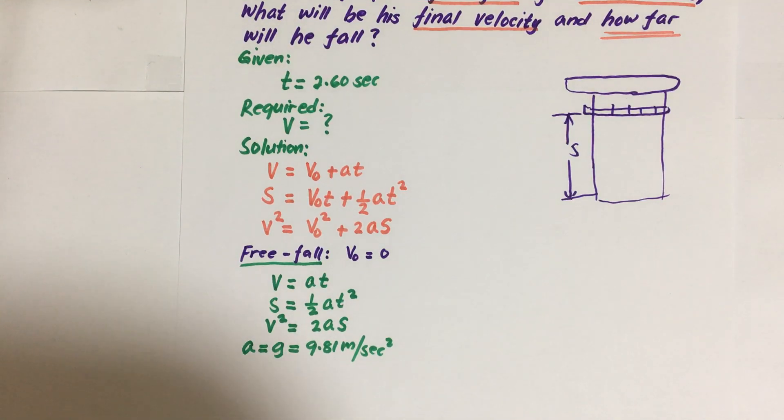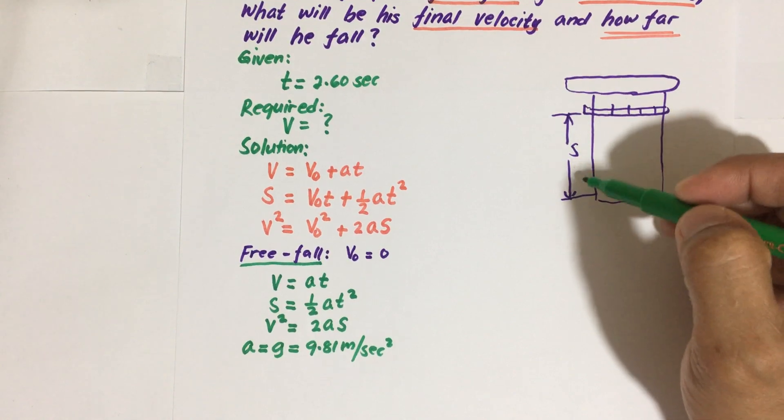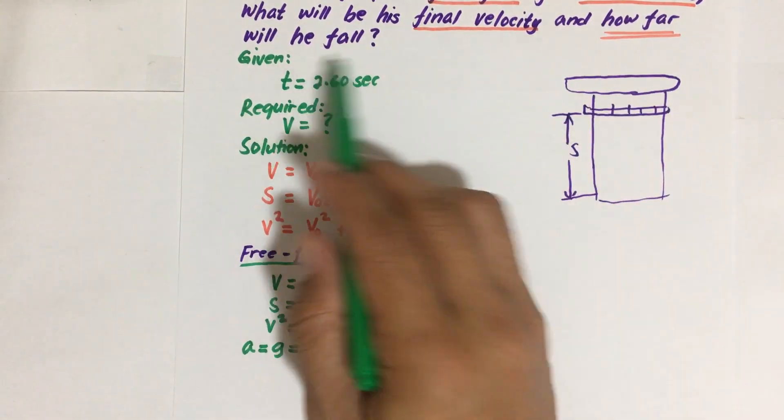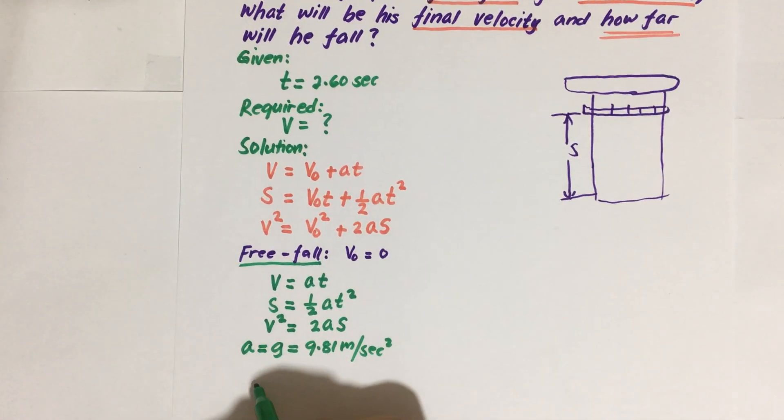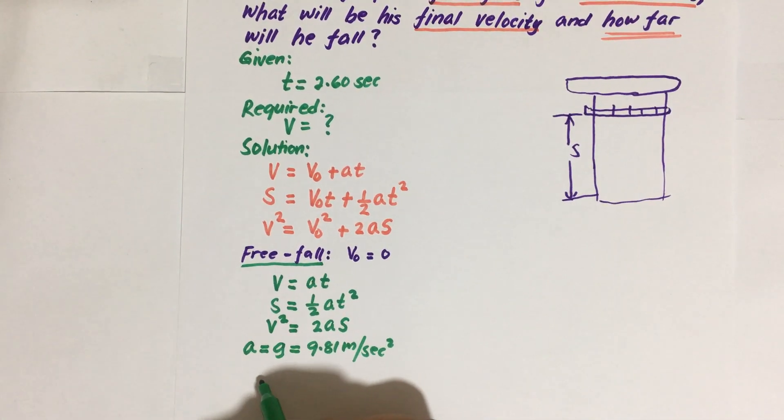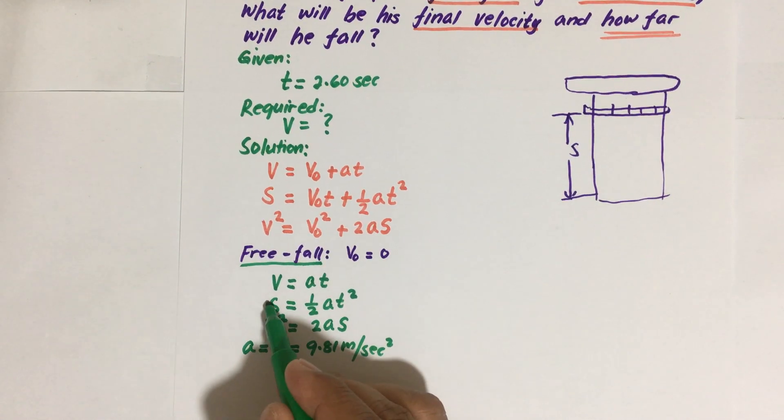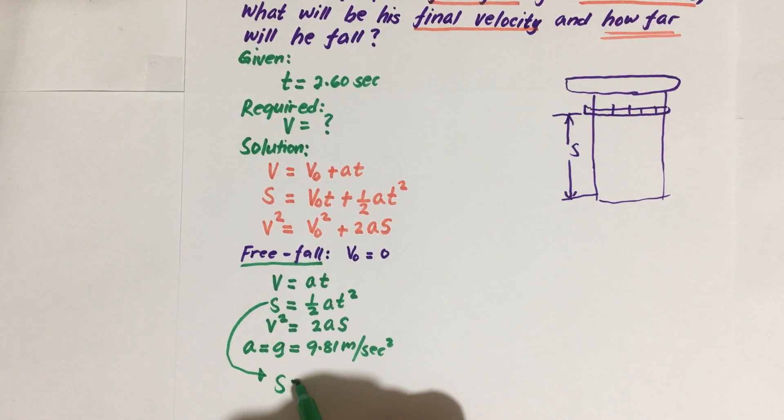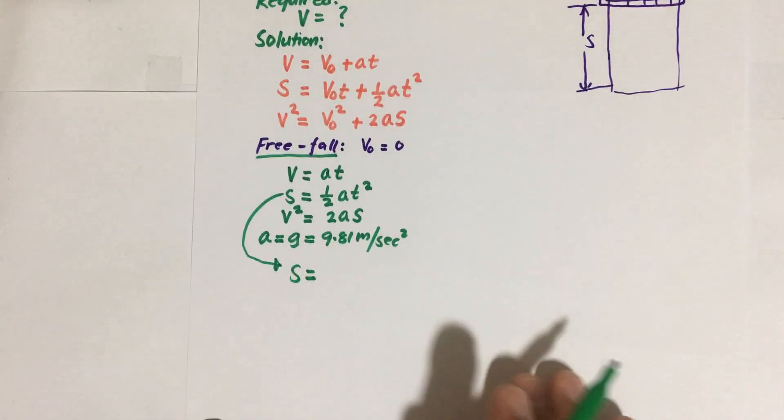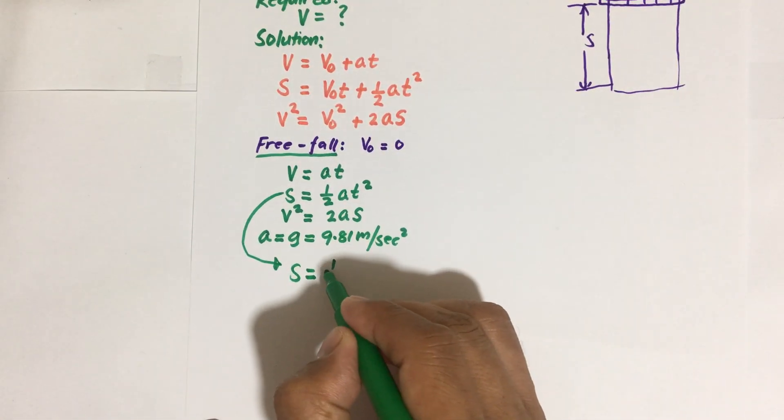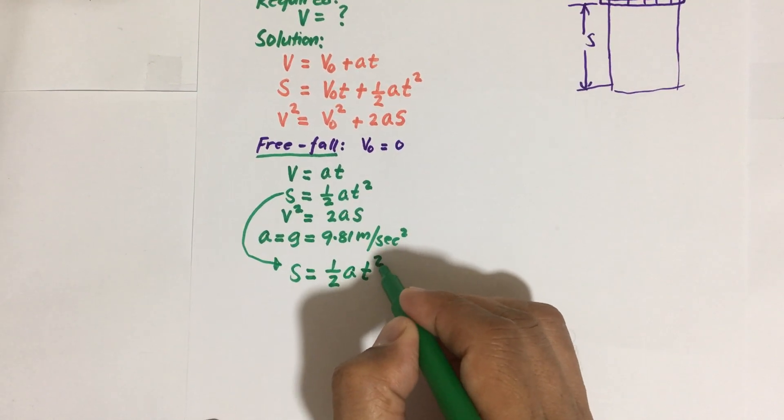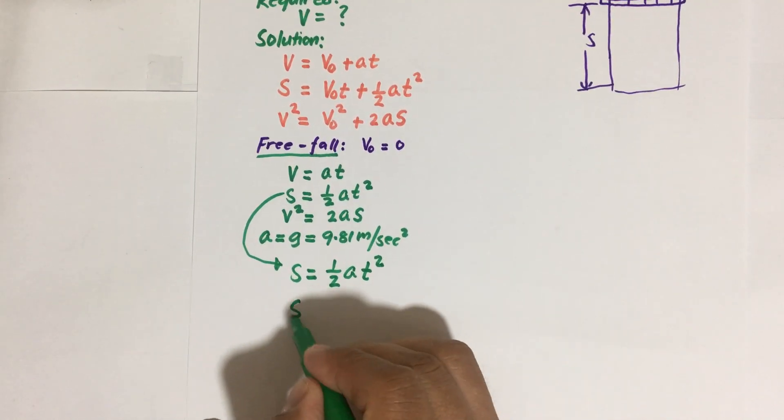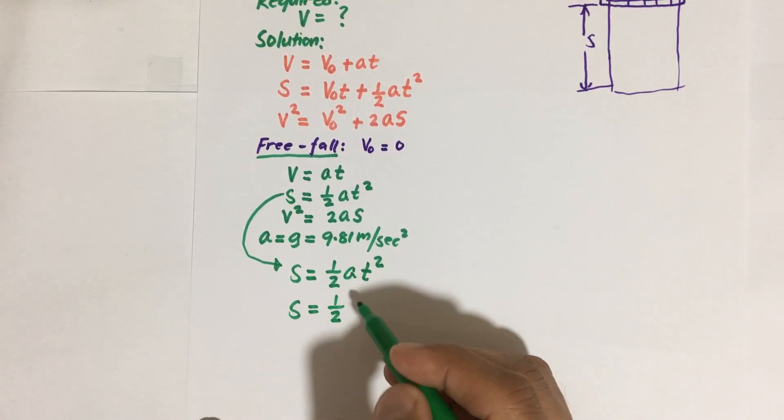And to solve for the S, the question is how far will he fall? It means this distance. So S, from this formula from here, we have S equal to one half times the acceleration times square of the time.